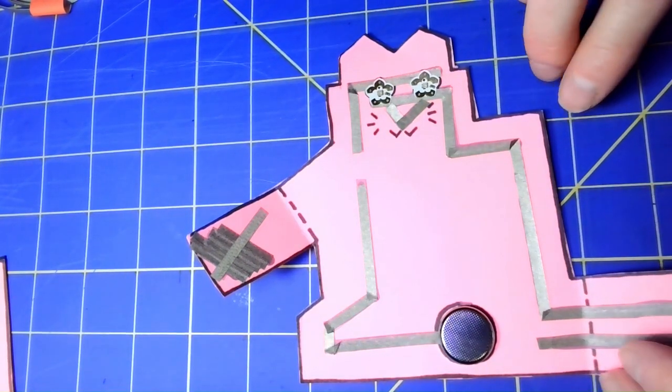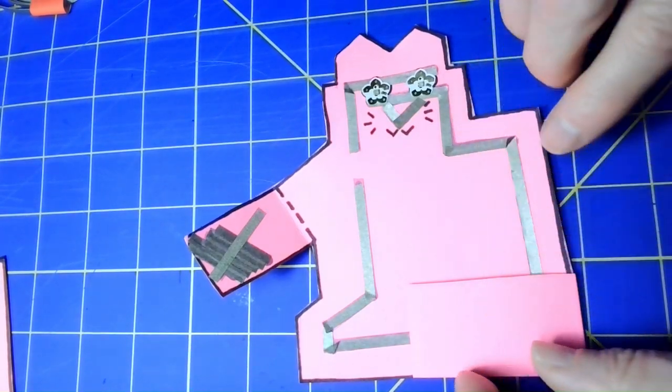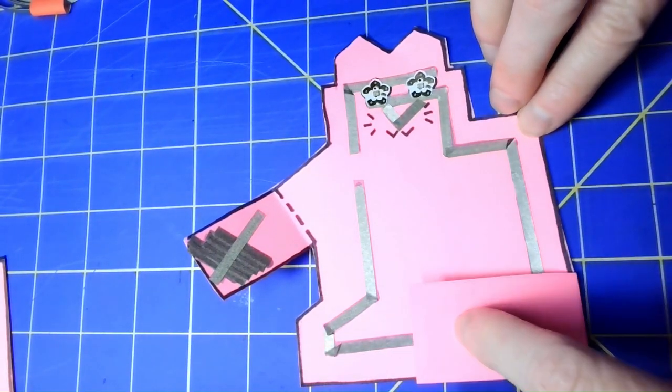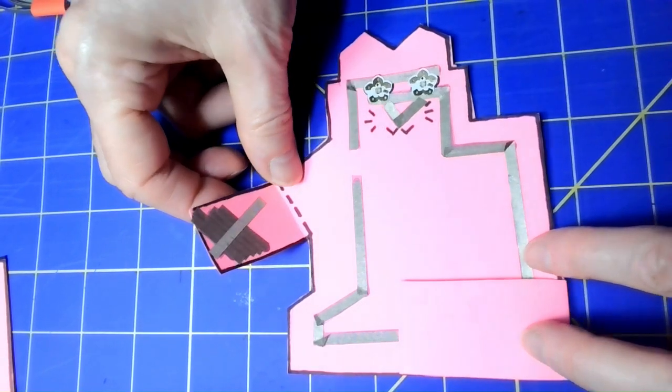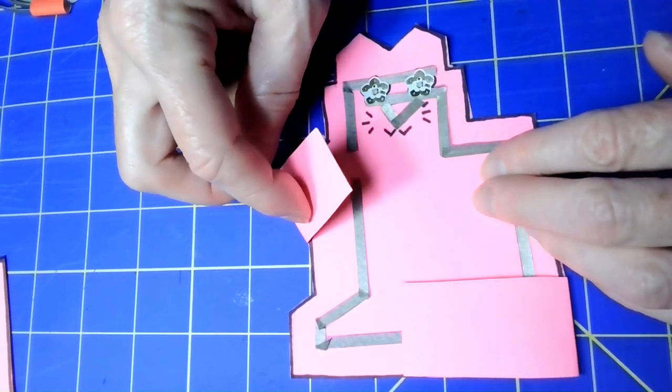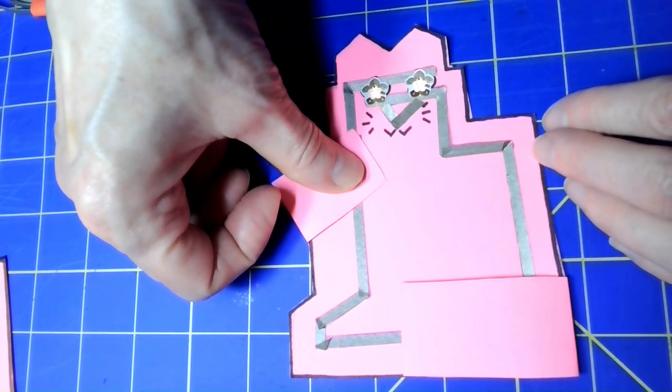Here's the moment of truth. I'm going to bend the tail over, and that magnet snaps that part of the circuit right to the battery. Here is our on-off switch. And we have a circuit.